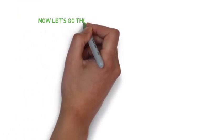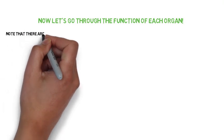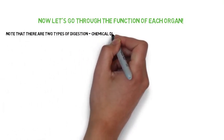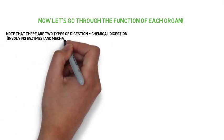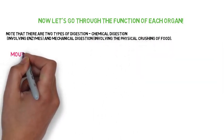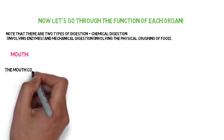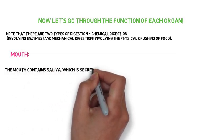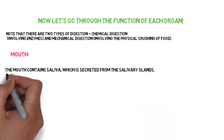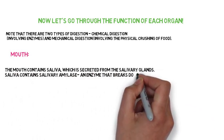Now let's go through the function of each of these organs. Note that there are two types of digestion: chemical digestion, involving enzymes, and mechanical digestion, involving the physical crushing of the food. The mouth contains saliva, which is secreted from the salivary glands. Saliva contains salivary amylase, an enzyme that breaks down carbohydrates — chemical digestion.